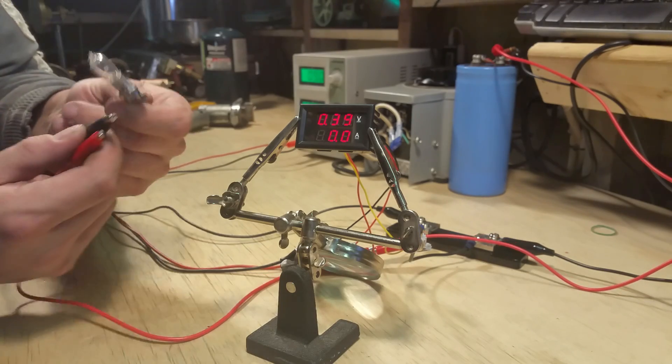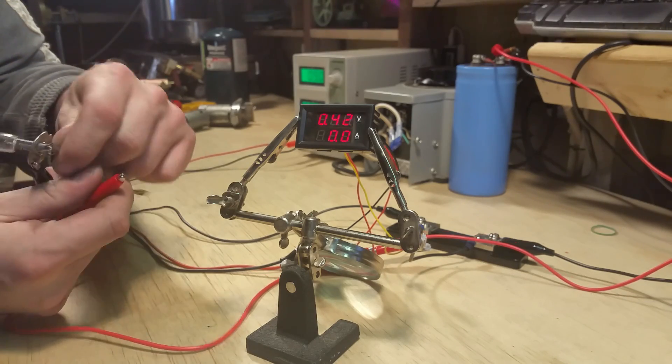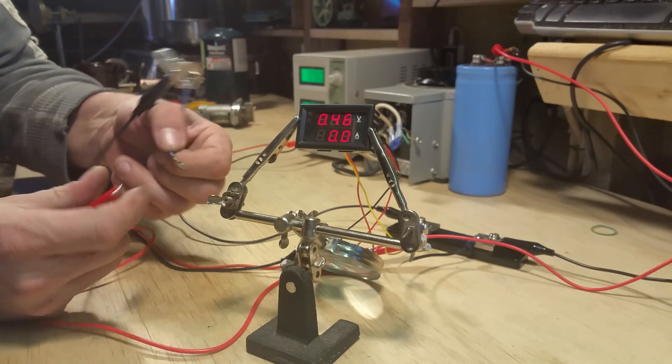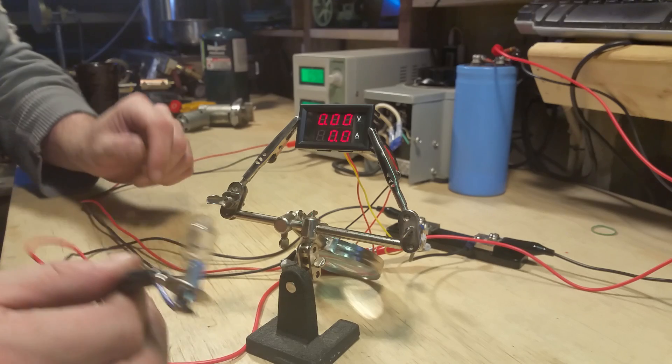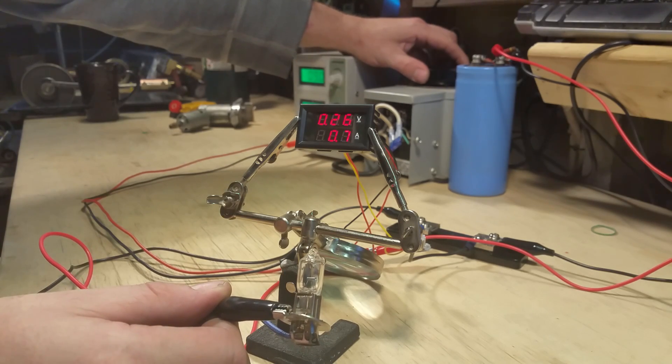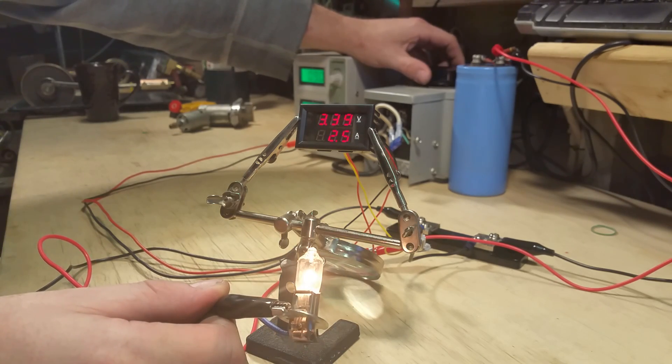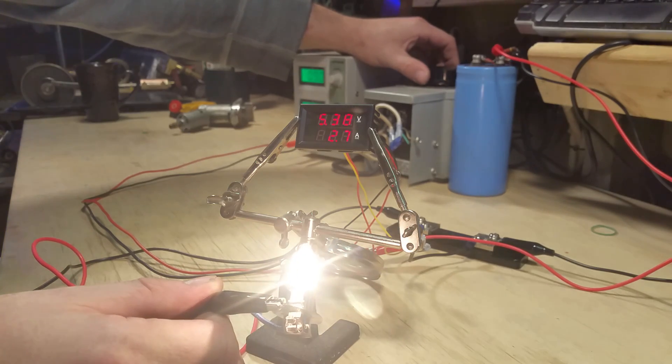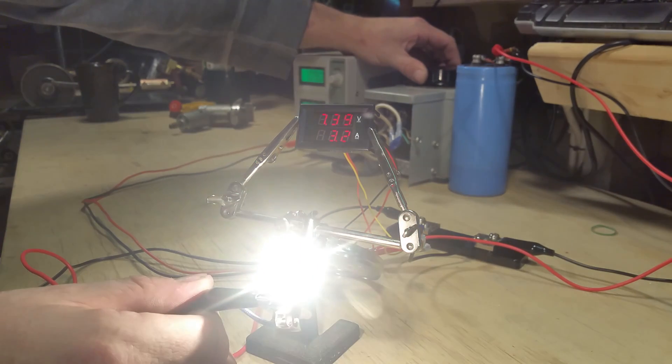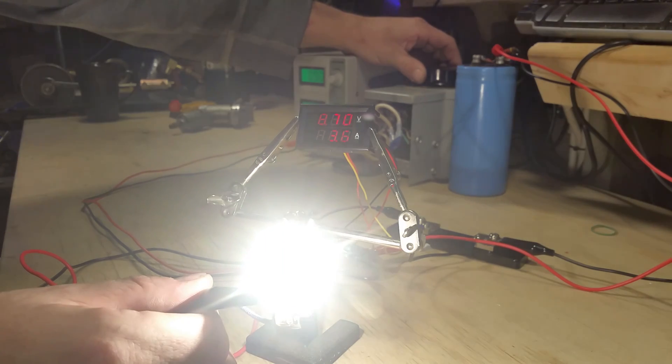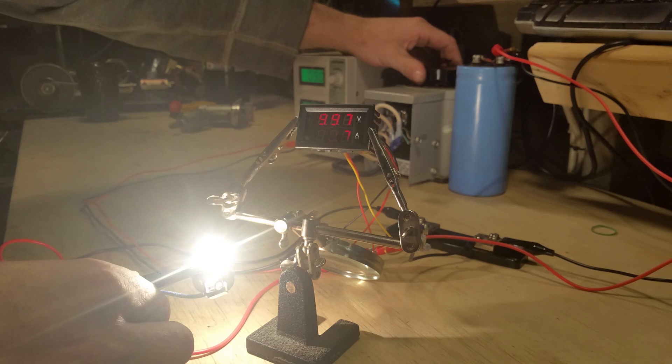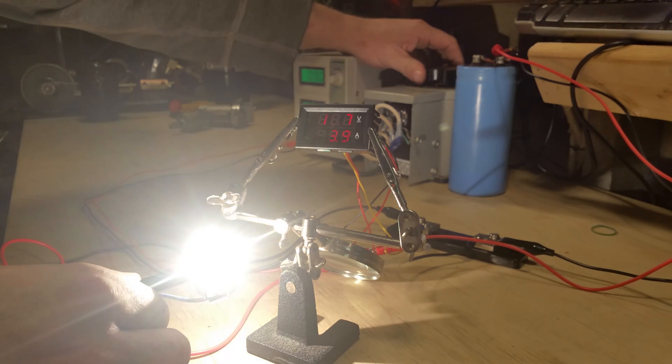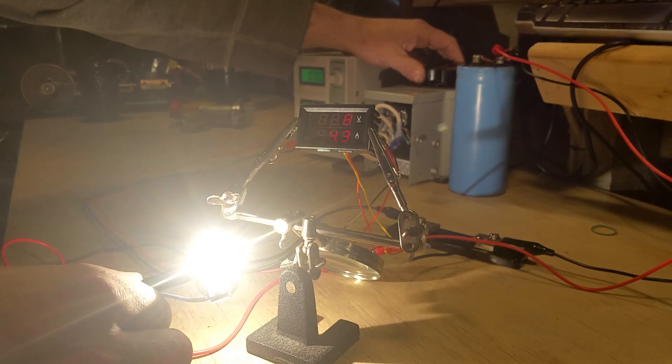Okay I got one more load to show you. This is just a 12 volt light bulb here and I have not tested this yet. I think these are 4 or 5 amps at 12 volts. That's 10 volts 3.7 amp. 12.6 volts, 4.3 amps.